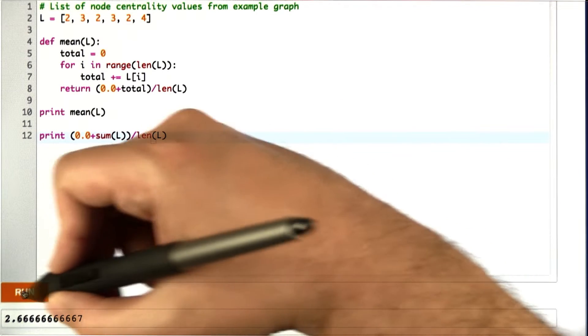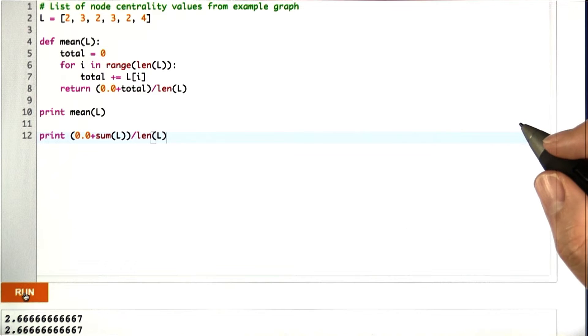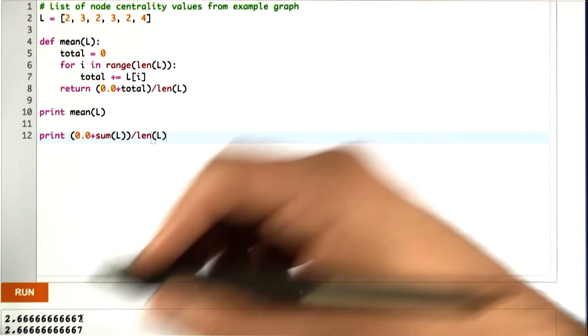What we can do is, in one command, sum up all the elements and divide by the length, and we've now computed the same thing twice.